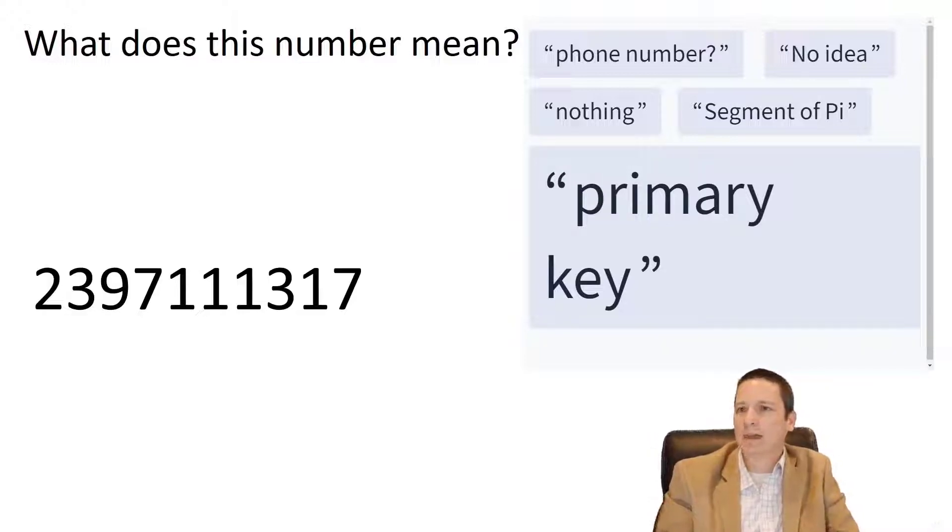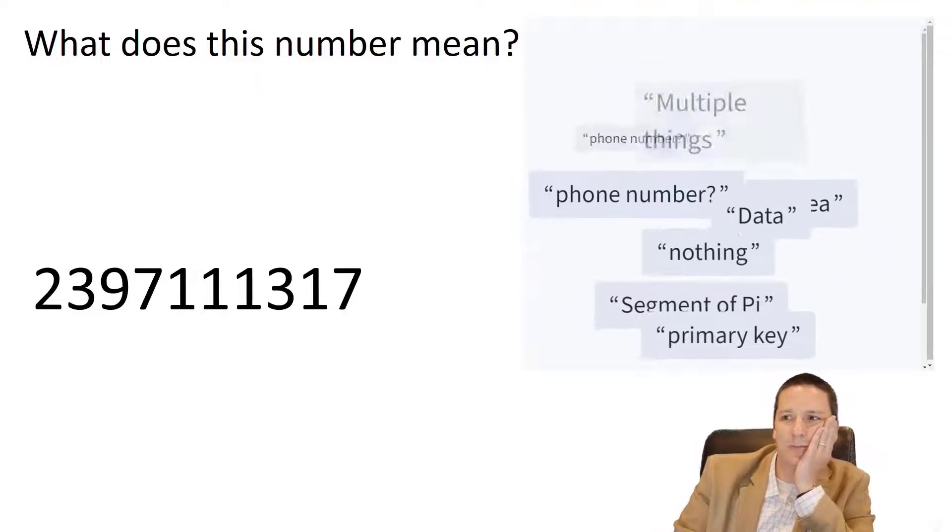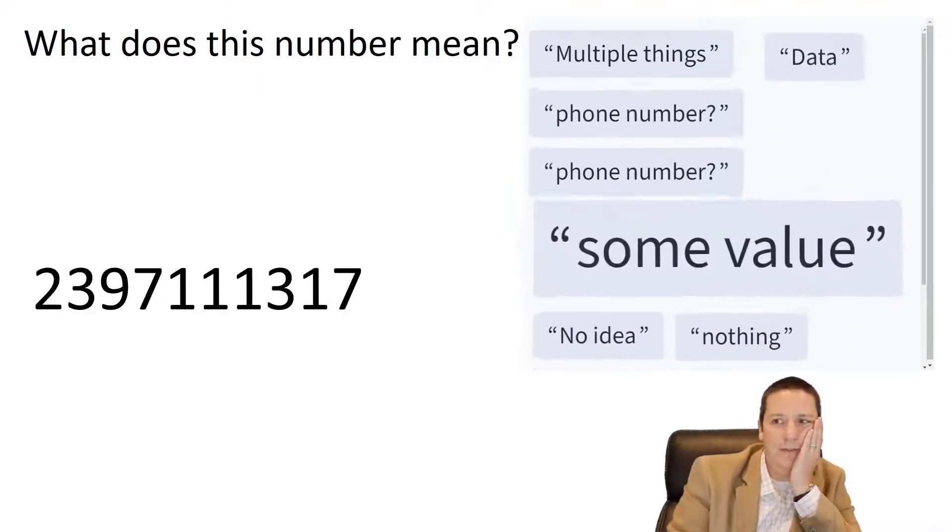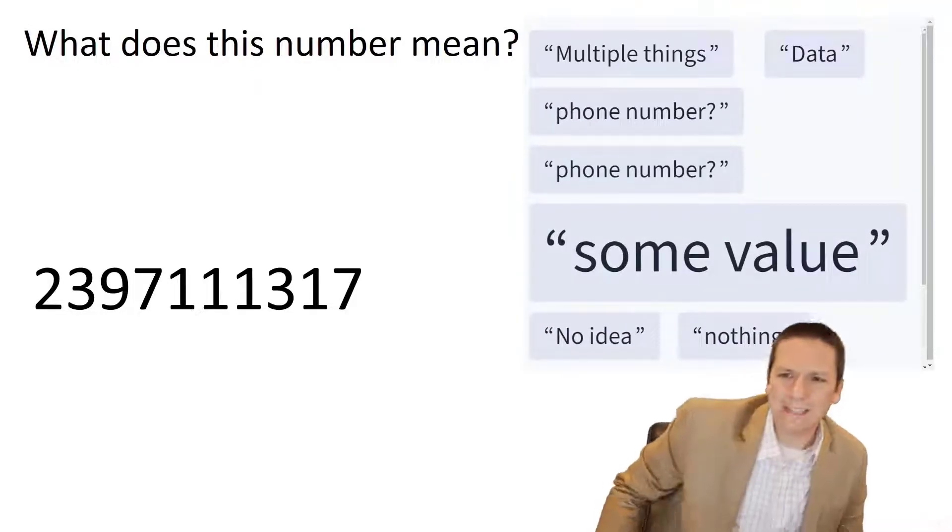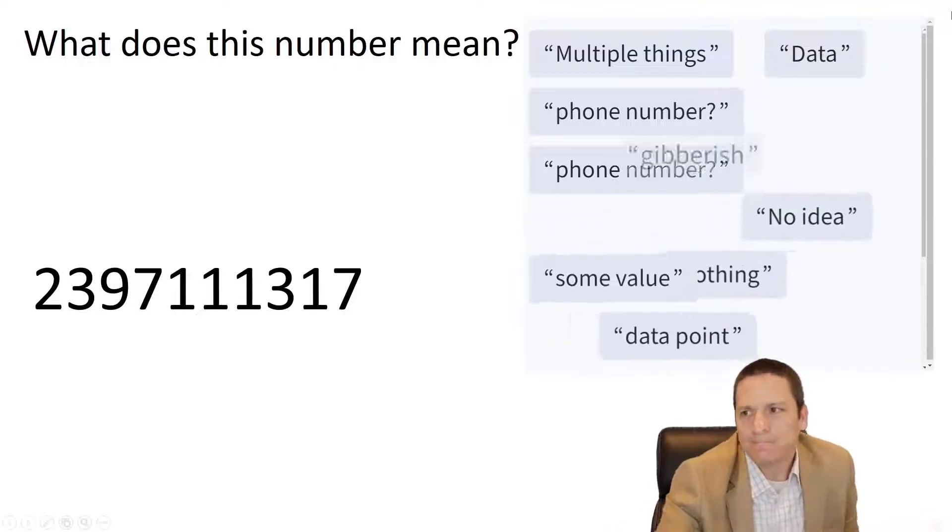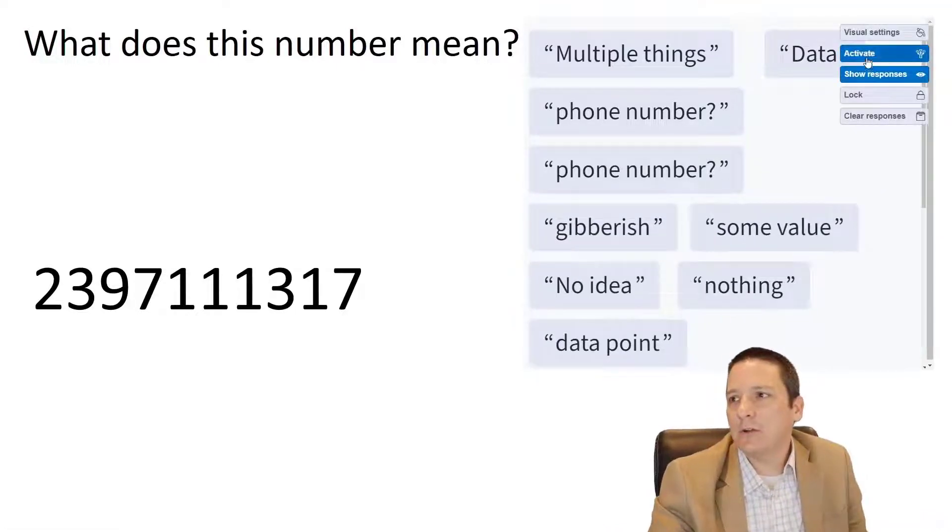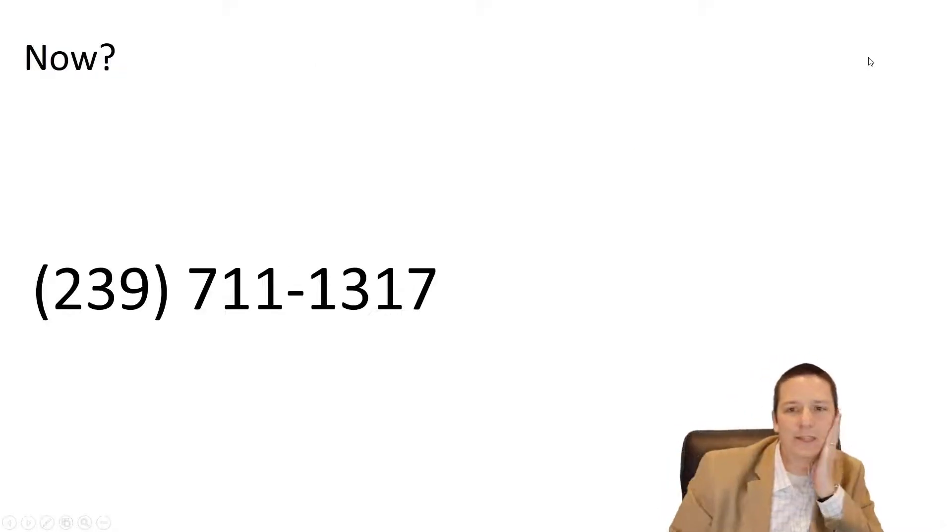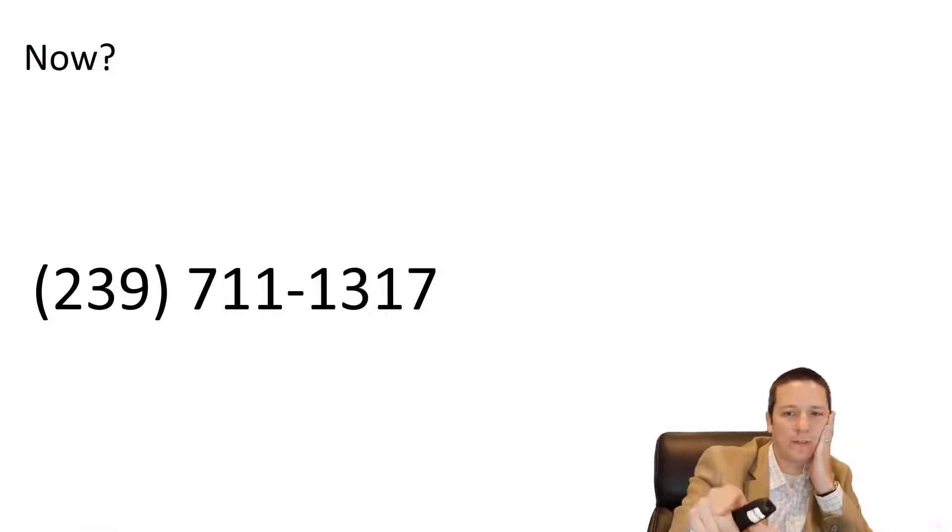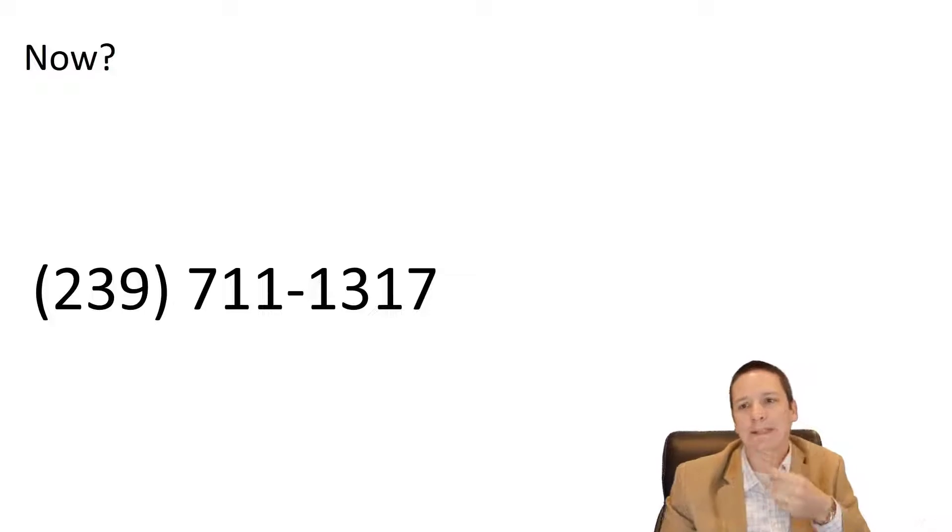Even then it doesn't really mean much. Multiple things - phone number, some value. It's difficult to know, right? But what if we did this? What if we put some parentheses around the 239 and we put a dash between the 711 and 1317?